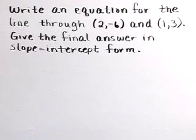Write an equation for the line through (2, -6) and (1, 3). Give the final answer in slope-intercept form.